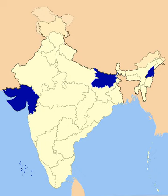The Directive Principles of State Policy in the Constitution of India state that the state shall endeavour to bring about prohibition of the consumption, except for medicinal purposes, of intoxicating drinks and of drugs which are injurious to health. Though the Directive Principles are not justiciable rights of the people, they are fundamental in the governance of the country.